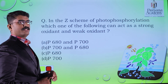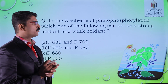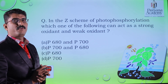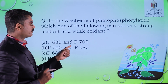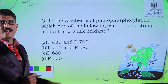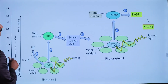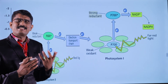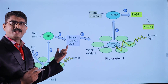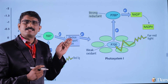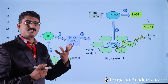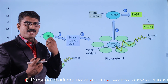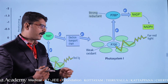Now coming to the next question: in the Z-scheme of photophosphorylation — that is, non-cyclic photophosphorylation — which one of the following acts as a strong oxidant and a weak oxidant? The Z-scheme is called so because the arrangement of electron carriers is based on their increasing redox potential. Redox potential is the affinity of a chemical species to absorb electrons.